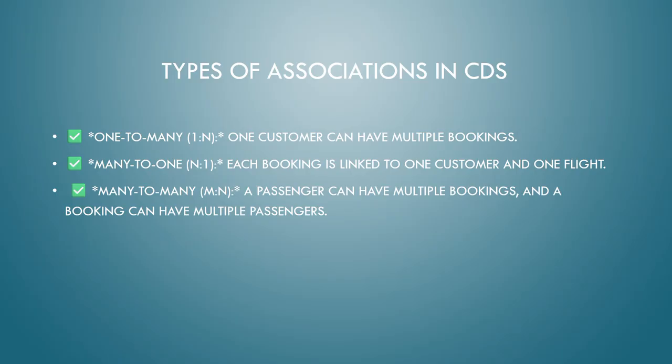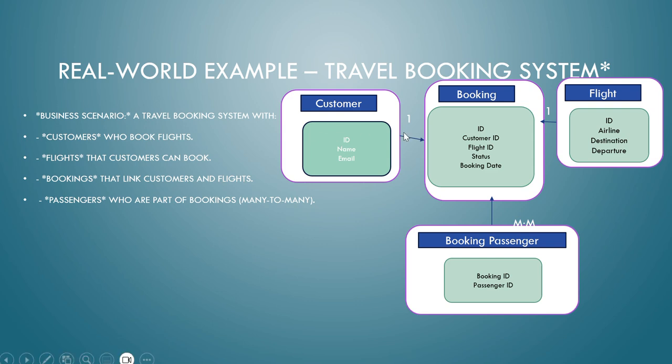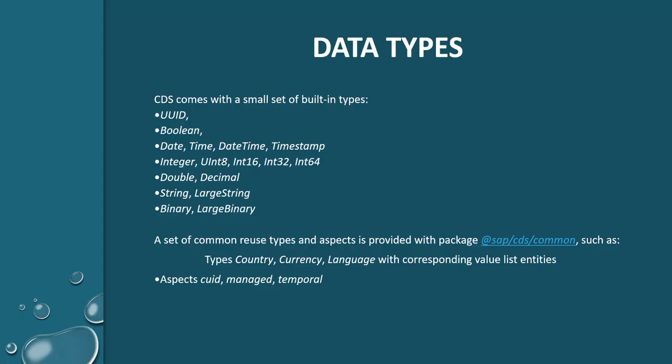Next, associations. In CDS there are three types of associations: one-to-many, many-to-one, and many-to-many. For one-to-many, in the real-time example one customer can have many bookings — a person can book multiple times. For many-to-many, a passenger can have multiple bookings and a booking can have multiple passengers. For booking to flight, many bookings relate to a single flight — that is many-to-one.